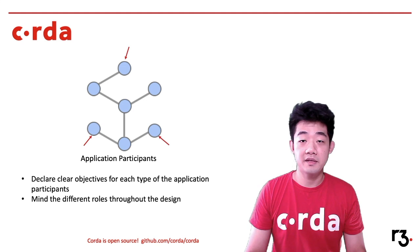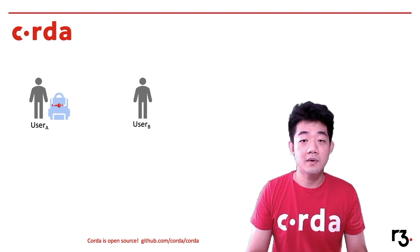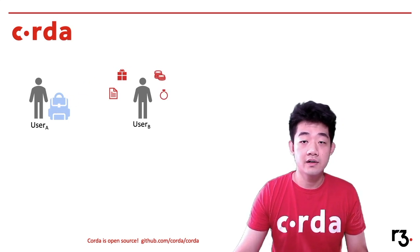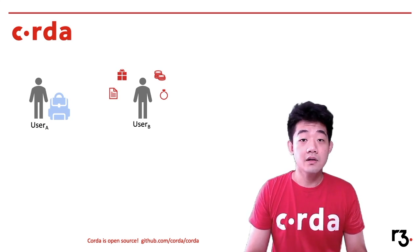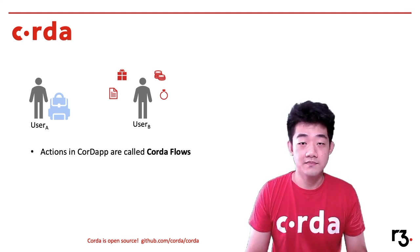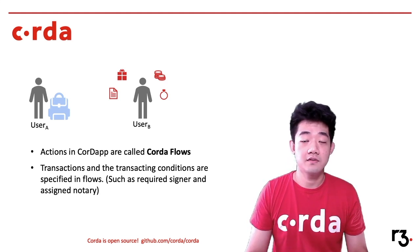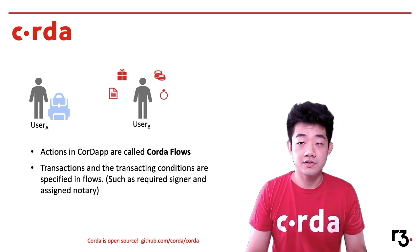With clear roles for participating parties, we are ready to go through the design for the actual components. First, we will think about what we want to do in our QuoraApp — what kind of transactions can a user invoke? There are four different actions, such as sending a document or sending luxury goods. In a QuoraApp, these actions are called QuoraFlows, and these flows are executables in the QuoraApp application. In a QuoraFlow, we will compose the transaction, specifying the inputs and outputs. We will also define some of the transacting conditions, such as which notary service will be used for that specific transaction, whose signatures are required, and where the transaction is sent to.